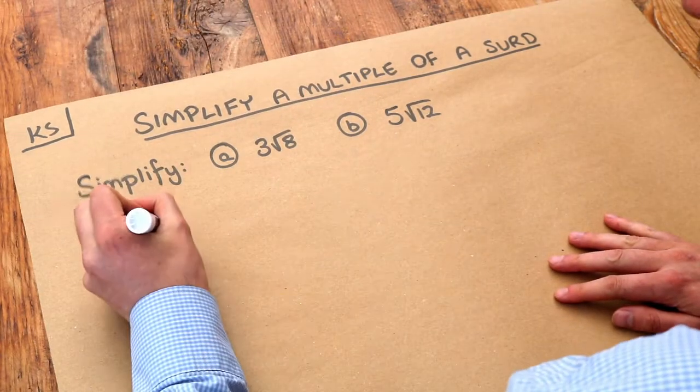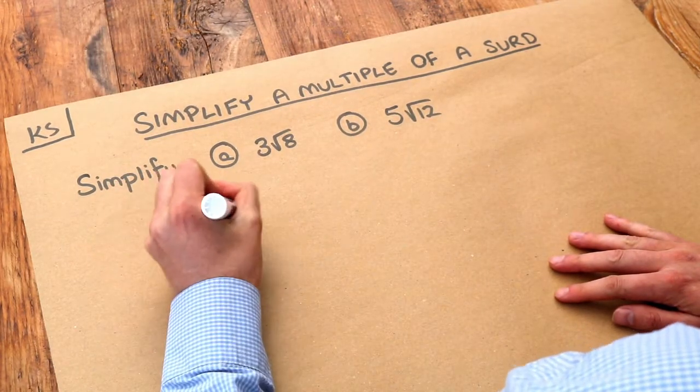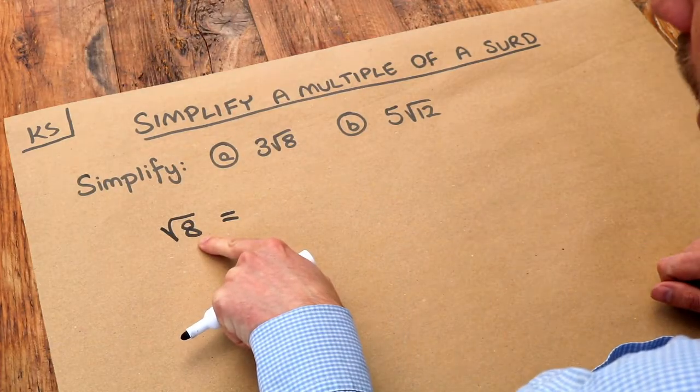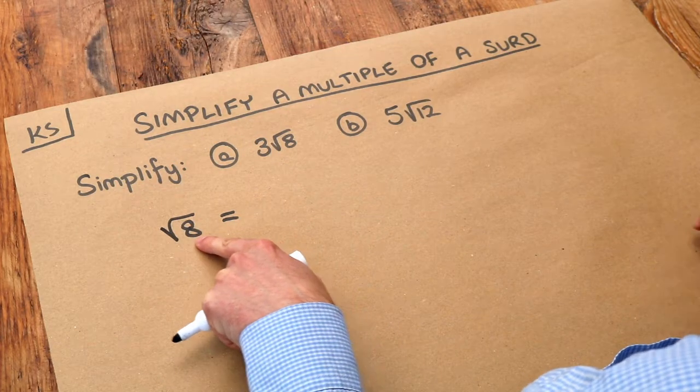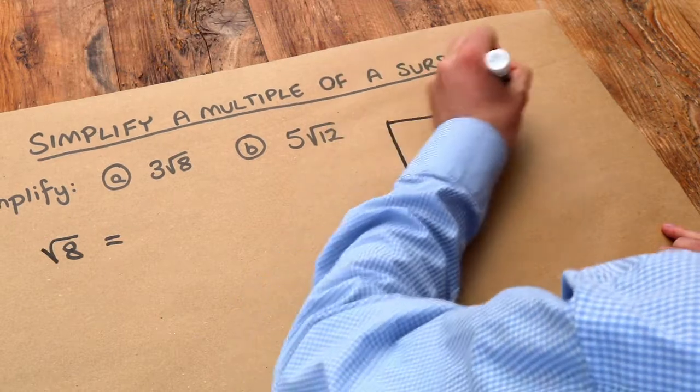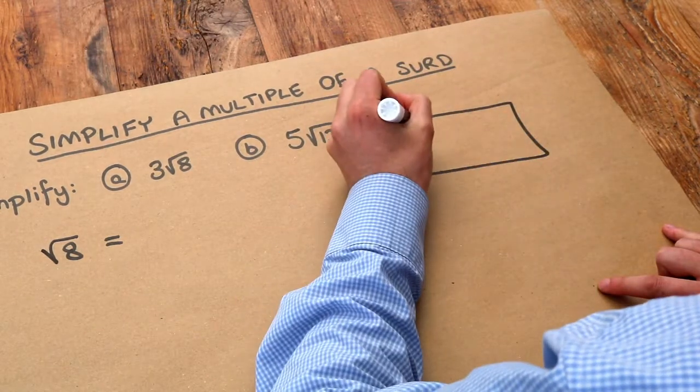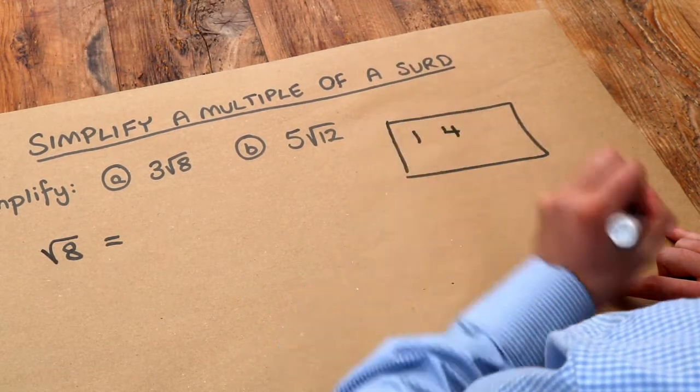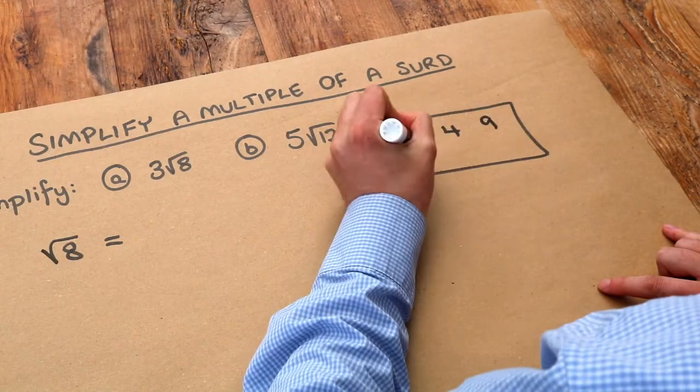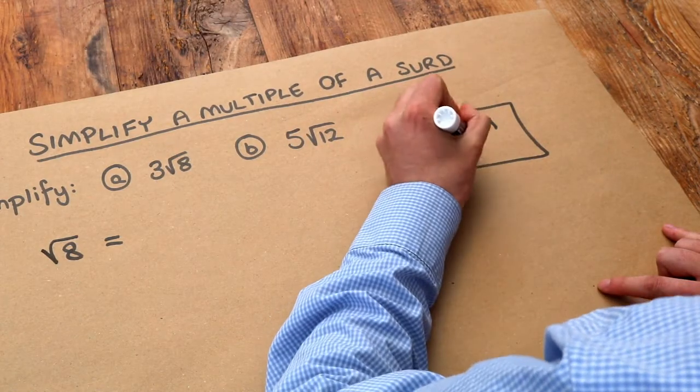If we think about how we simplified root eight, what we did was to find the largest square number that goes into eight. Now if I just for convenience write out some square numbers: one squared is one, two squared is four, three squared is nine, four squared is sixteen, five squared is twenty-five and that'll probably do.